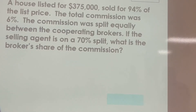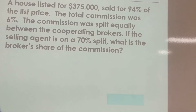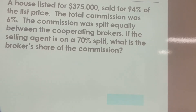This question is basically about evaluating and determining the commission. The question reads: a house is listed for $375,000 but the house was sold for 94% of the listed price. The total commission was 6%, split equally between the co-operating brokers. If the selling agent is on a 70% split, what is the broker's share of the commission?